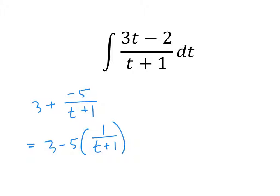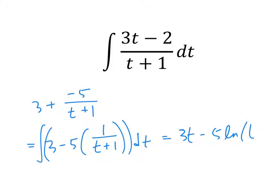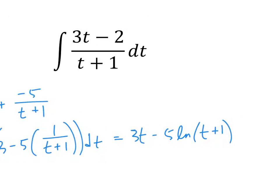So this is just that, DT. So the answer is 3T minus 5 natural log of T plus 1, plus C.